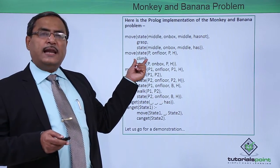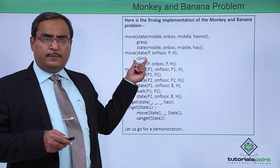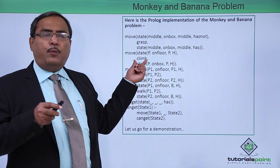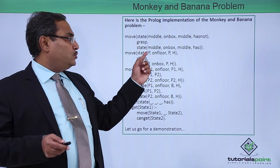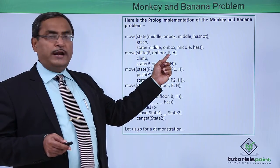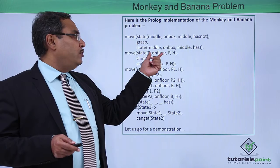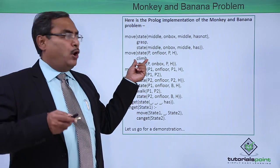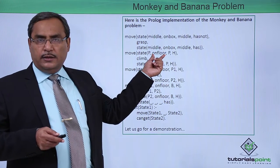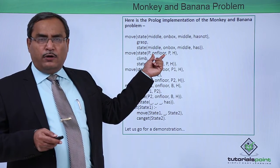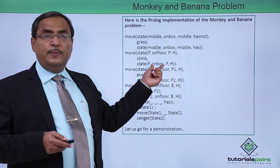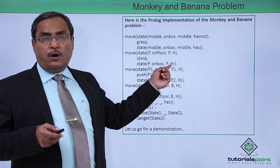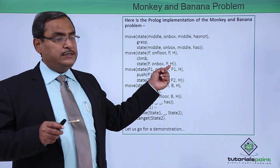Now what about climb? Climb can take place if the horizontal position of the monkey and the box position are the same — that is why we write PP for both. So there is a climb: the monkey is climbing the box. Initially the monkey will be on the floor; now after climbing the monkey will be on the box. Whether it has got the banana or not, that state remains unchanged.